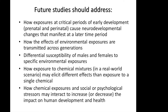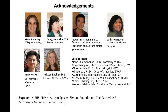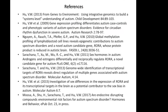We need to know how chemical exposures combined with social or psychological stressors may interact to increase or decrease the impact on human development and health. I'd like to close by acknowledging the graduate students in my lab who have done different aspects of the work, as well as support from the NIEHS — the National Institute of Environmental Health Sciences — the NIMH, Autism Speaks, Simons Foundation, and McCormick's Genomic Center here at GW. These are the references of the papers I've glossed over in this short talk. If anybody has any questions, I'm happy to entertain them. Thank you very much.